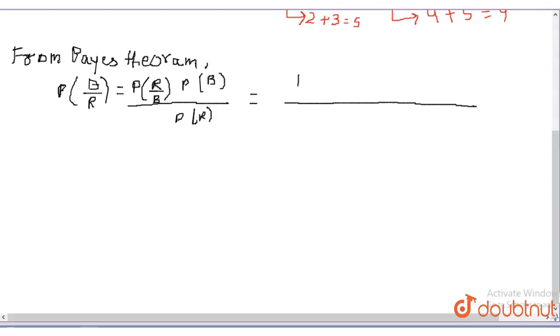Please watch this equation very carefully. This will come, equal to probability of R upon B.